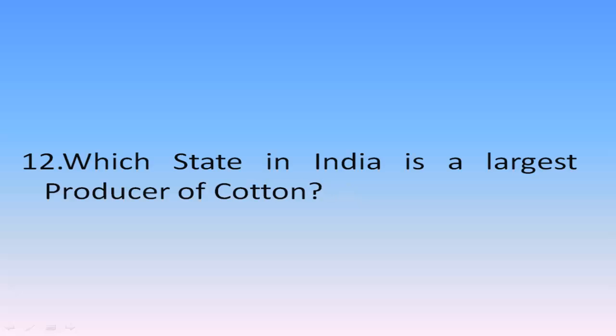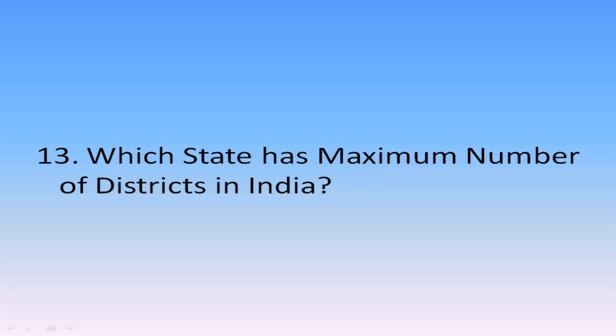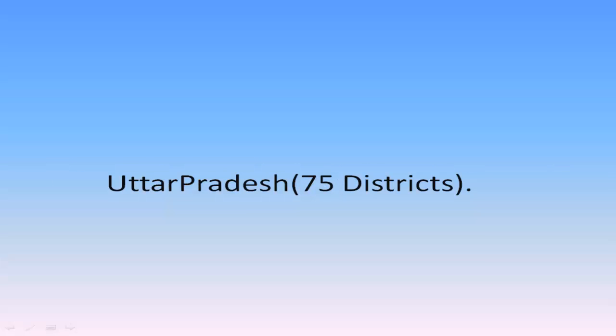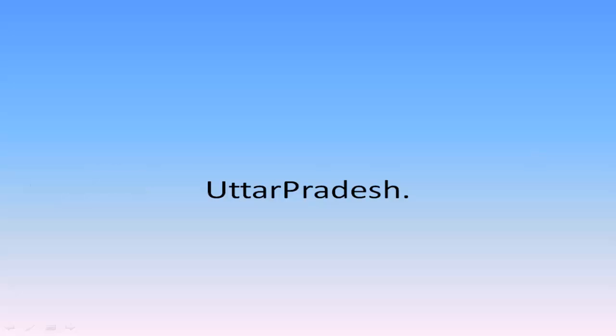Which state in India is the largest producer of cotton? Gujarat. Which state has the maximum number of districts in India? Uttar Pradesh — currently 75 districts. Which Indian state has the maximum state borders? Uttar Pradesh, the only Indian state that shares its boundary with 9 other Indian states.